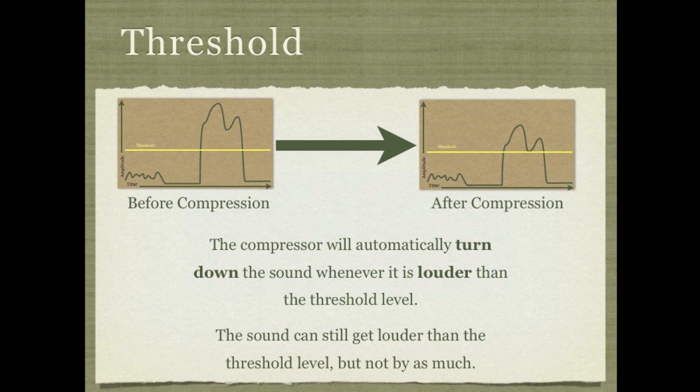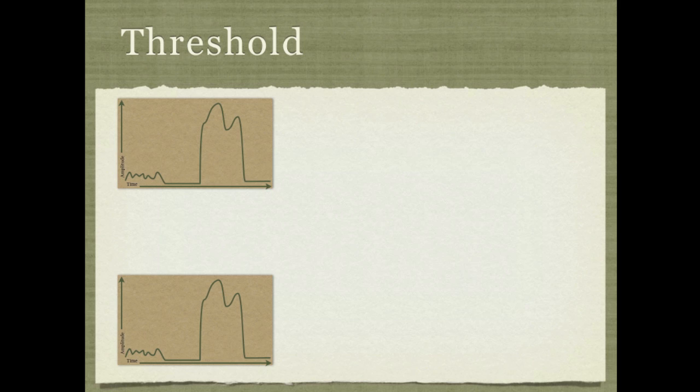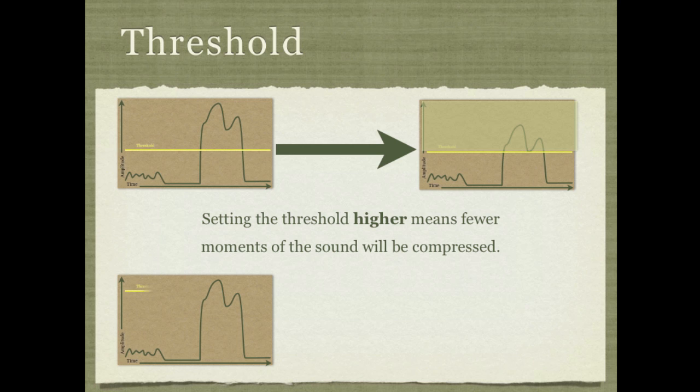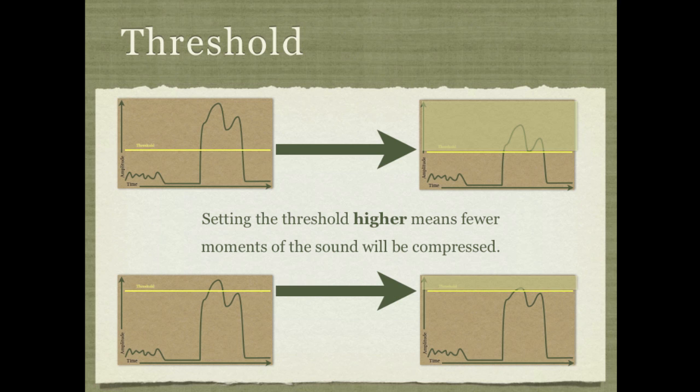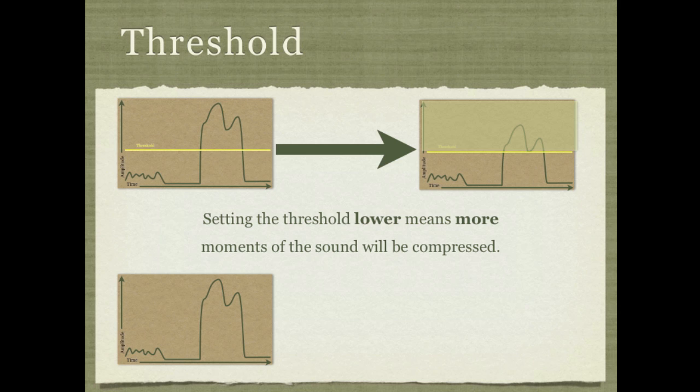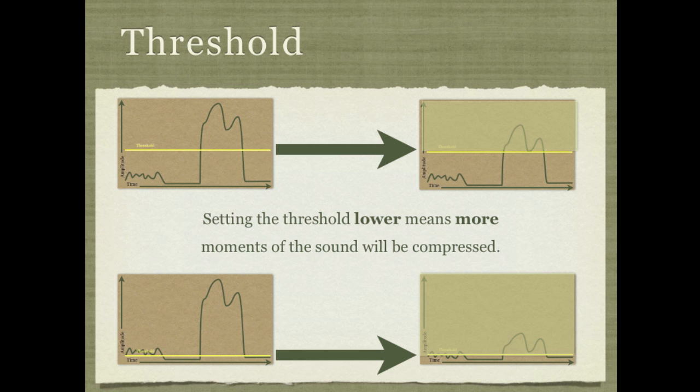Now notice that the sound can still get louder than the threshold level, but just not by as much. Now where you set the threshold impacts what parts of the sound get turned down, and that depends on what the sound is. So in this particular sample, if you set the threshold at that middle level, just the words this is a loud sound will get turned down. But if we set the threshold even higher, then only a couple brief moments will be compressed, like so. Meanwhile, again comparing to this middle level, if you set the threshold lower, that means more of the time when the sound is hanging around at lower levels, more of it will get compressed.